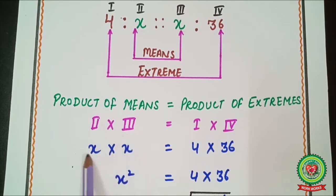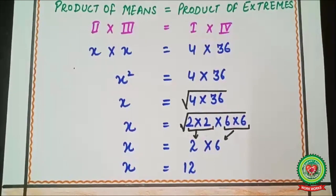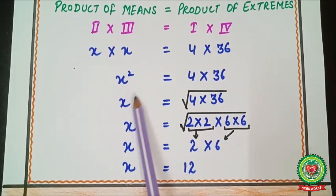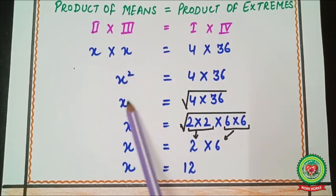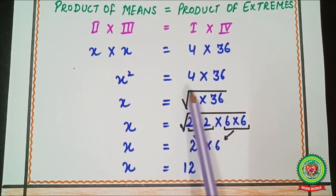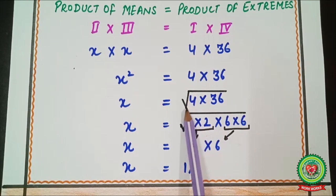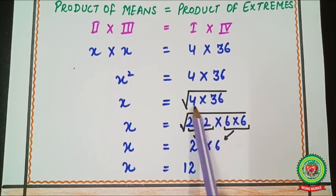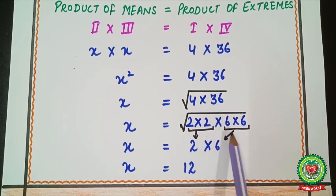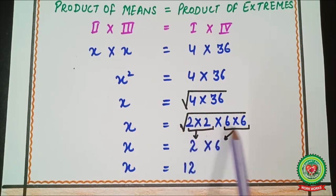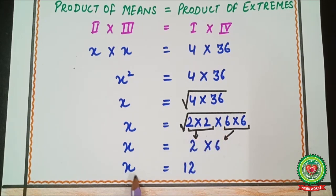Students, be careful — x times x is x squared, not 2x. That is x raised to power 1 times x raised to power 1, giving x raised to power 2. To find x, we shift the square to the right-hand side, turning it into a square root. So x equals √(4 × 36). Breaking these down: 4 = 2×2 and 36 = 6×6, so x = 2 × 6 = 12. The mean proportional to 4 and 36 is 12.